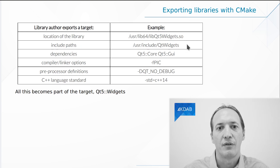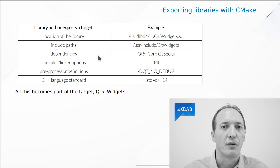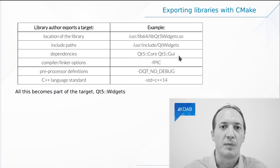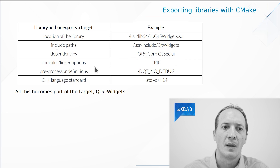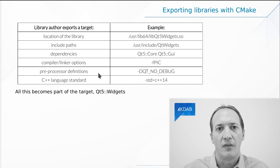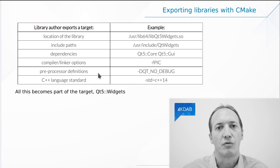The include path for the library, which is where to find headers — the headers can be found here, and there could be multiple directories in this list. We can also encode dependencies. We say here Qt Widgets actually depends on Qt Core and Qt GUI, so this is also saved as part of the target. We can also say here are the compiler or linker options that have to be used, like FPic for instance. We say these are the processor definitions that should be used — for instance, Qt No Debug or other defines that will be propagated this way from the library to the users of the library.